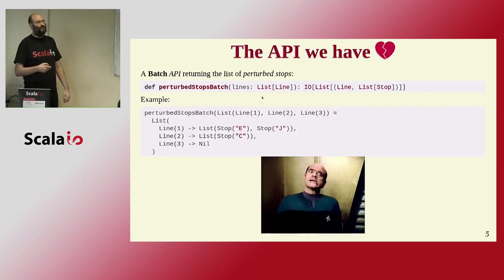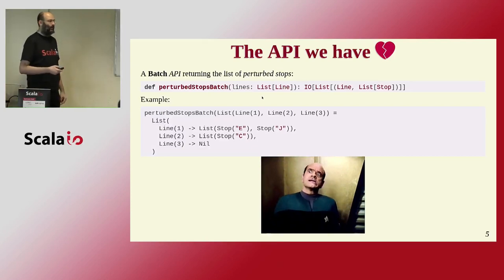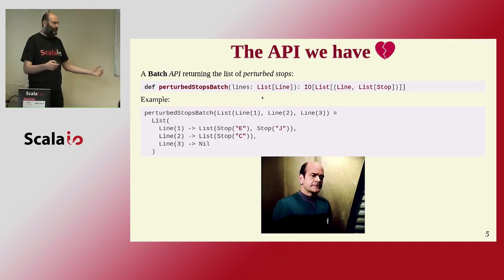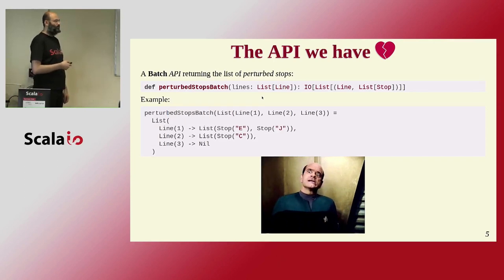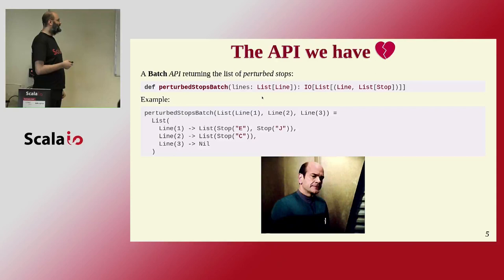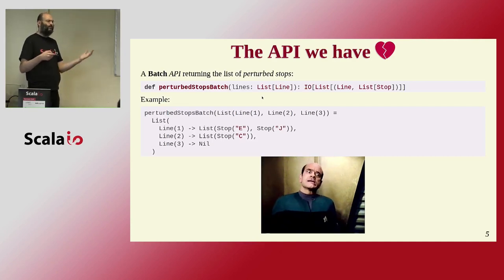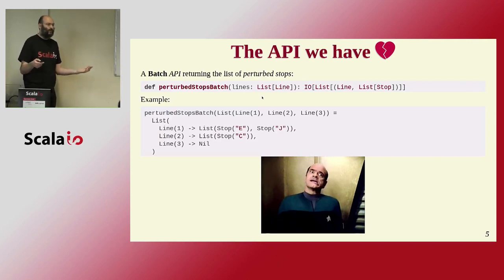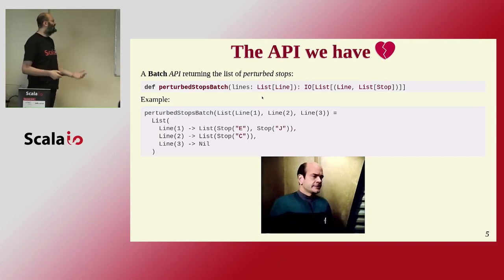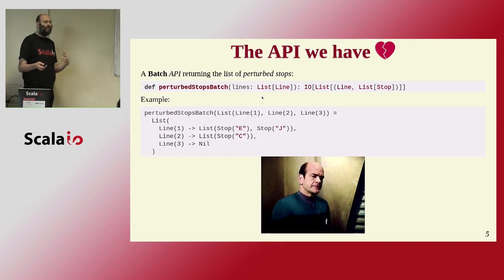The problem is that's not what we have. The API we really have is a batch API: we give the function a list of lines, not a single leg, and it returns the stops where there is a problem. This is not what we wanted — we want a leg and just a boolean. We have the problems on the line, but the question is: am I concerned? Line one has a problem at E and J, but maybe I'm after J, or before E. I don't know.